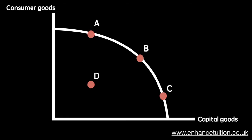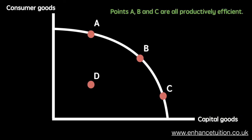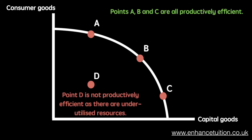The PPC here represents the production of an economy split between producing capital goods and consumer goods. Points A, B, and C along the PPF represent the full use of available resources and are therefore productively efficient. However, point D is not productively efficient as there are some underutilized resources.